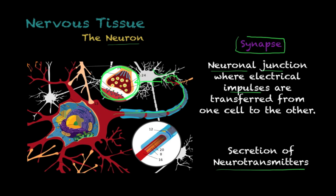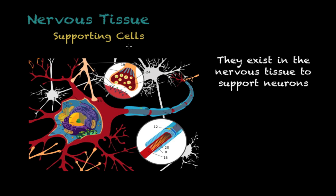The neuron is the most important cell in nervous tissue. But without the cells called supporting cells, the neuron would not be able to perform to its fullest. These are really important cells found in nervous tissue that we need to briefly discuss in this tutorial covering the basics of nervous tissue.